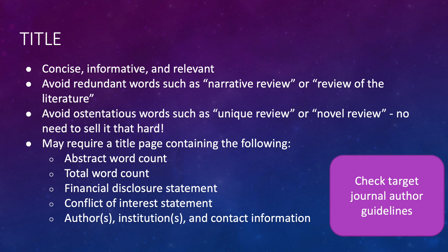For the title, you want to be concise and informative. Make sure you include the relevant topic in the title. You don't want to use redundant words such as 'a narrative review' or 'review of the literature' except if the journal requires it. Some journals do require you include the type of review in the title. Also, don't try to oversell it by calling it a 'unique' or 'novel' review — it tends to rub reviewers the wrong way.